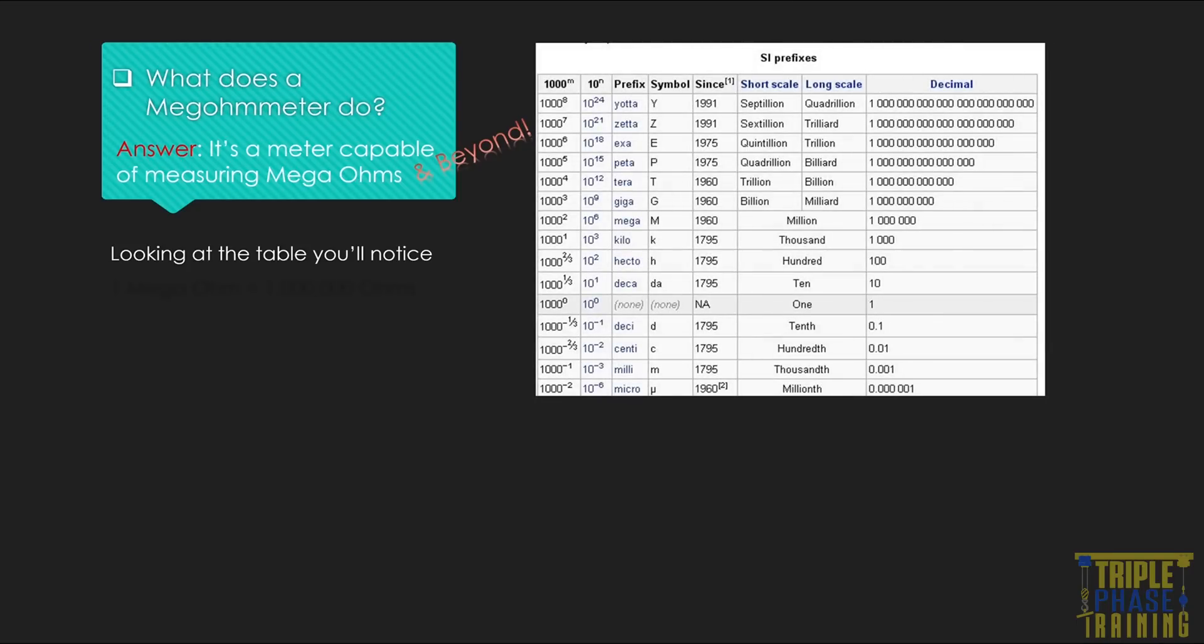Looking at the table, you'll notice 1 mega ohm is equivalent to 1 million ohms. Likewise, 1 giga ohm is 1 billion, 1 tera ohm is 1 trillion, and the scale continues.